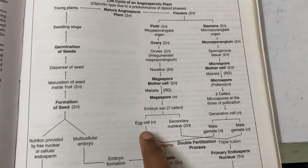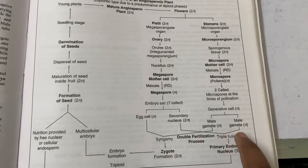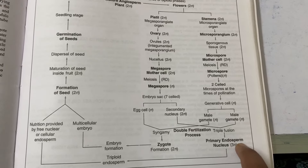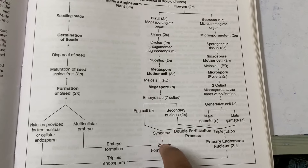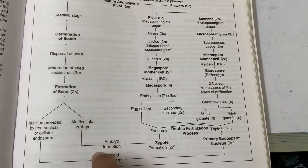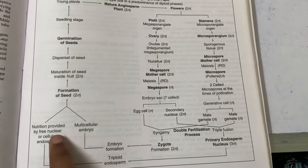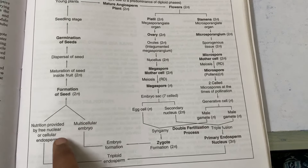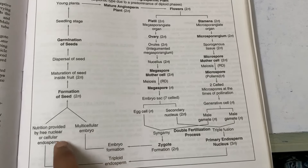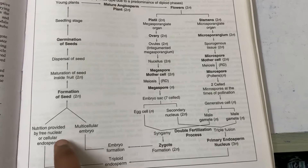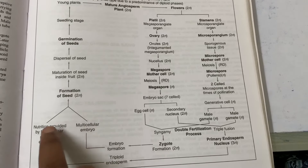The fusion of the egg cell and a male gamete is called syngamy. The fusion of the secondary nucleus and a male gamete produces the primary endosperm nucleus, which gives rise to the triploid endosperm. The zygote gives rise to the embryo, which develops into a multicellular embryo. The endosperm provides nutrition — for example, coconut water is a free nuclear endosperm — which gives protein nutrition to the seed.